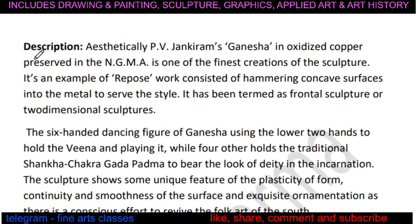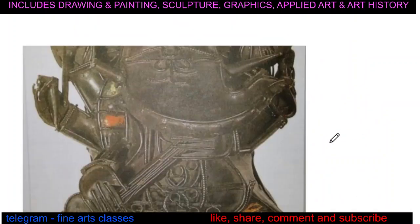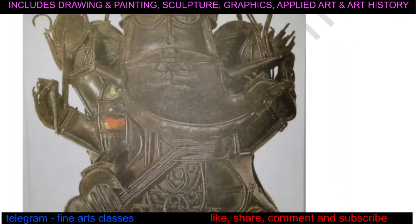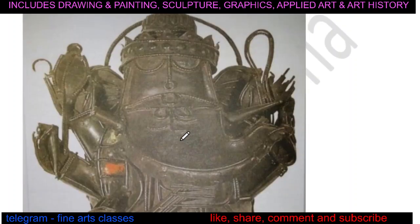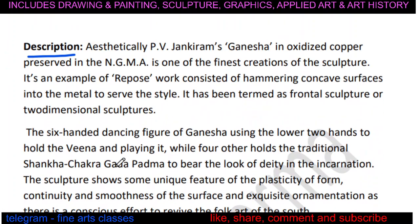Aesthetically, PV Janki Ram's Ganesha in oxidized copper, preserved at NGMA, is one of the finest creations of the sculptor. It is an example of repoussé work, consisting of hammering a concave surface into the metal to serve the style. It has been termed a frontal sculpture — you can see it from the front — and it is a two-dimensional sculpture. Various elements of wire and metal are assembled and fixed through hammering, making it quite a unique sculpture by PV Janki Ram.